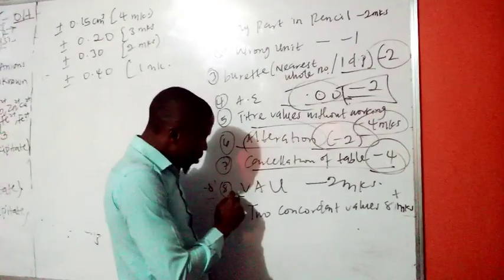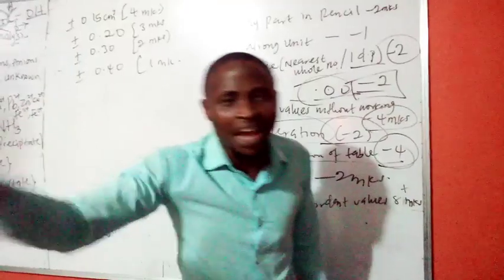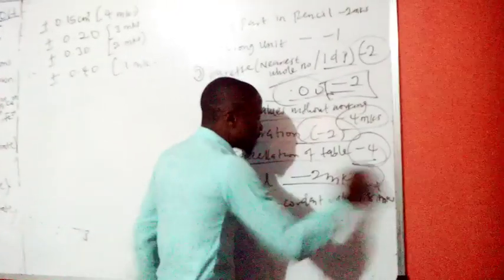Then, we have volume of acid used. If you do not include the volume of acid used, do you understand, at any point in time, that will attract removal of two marks.